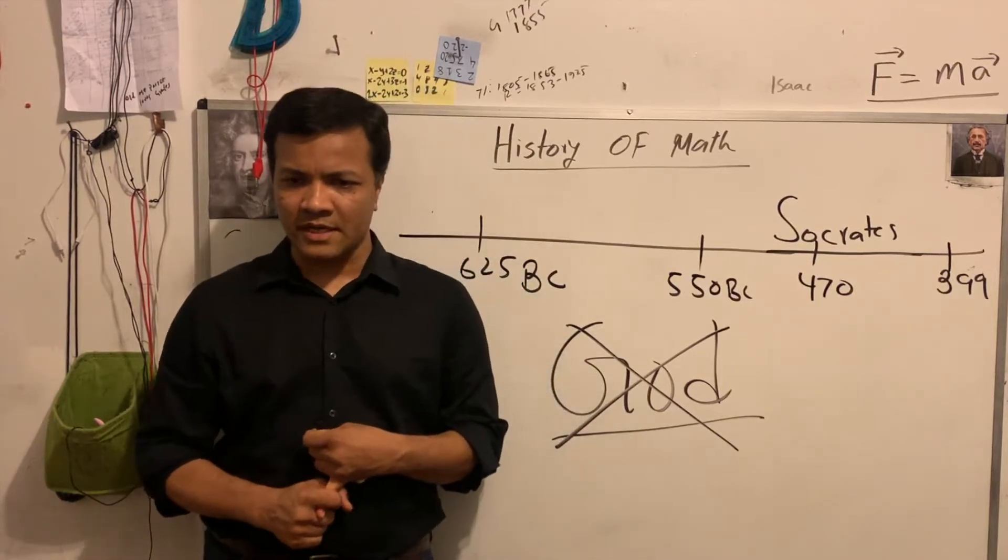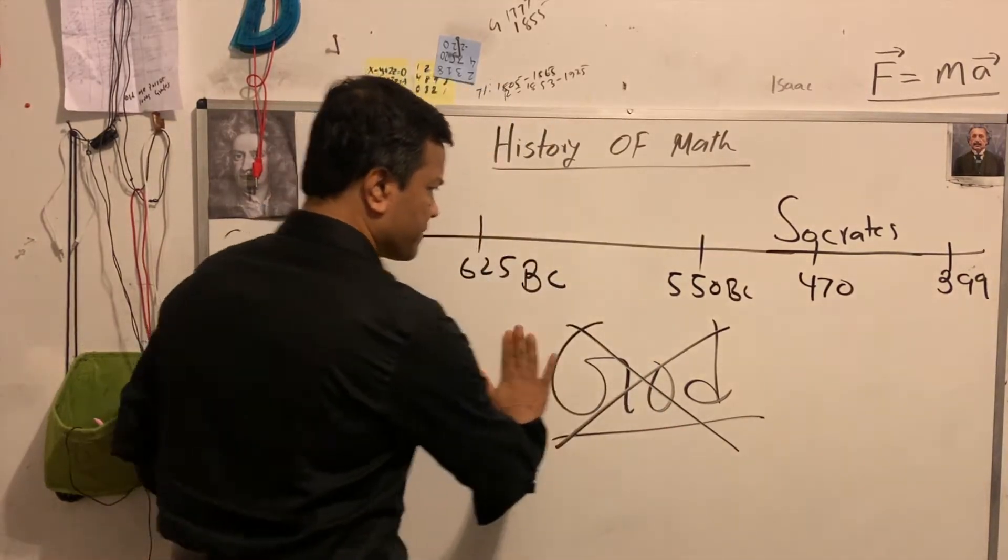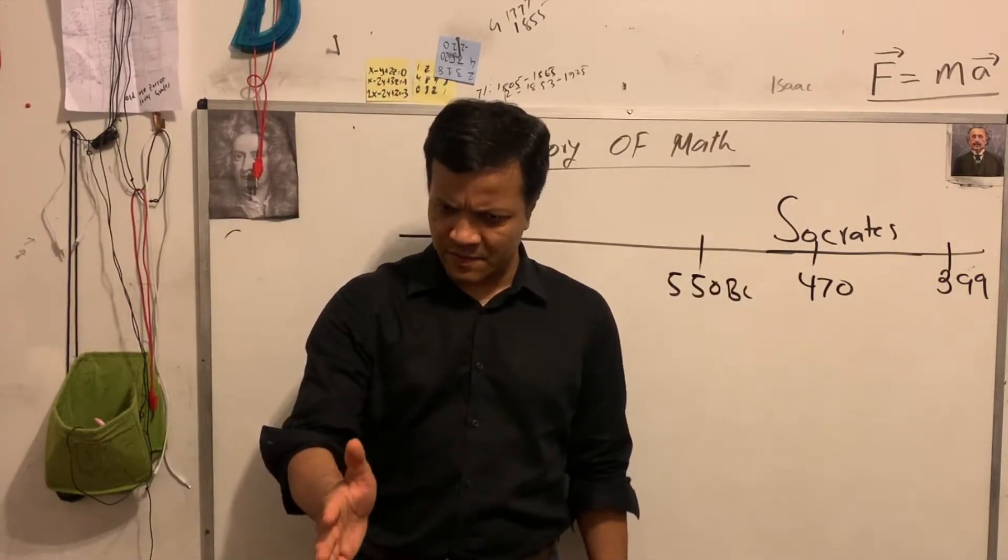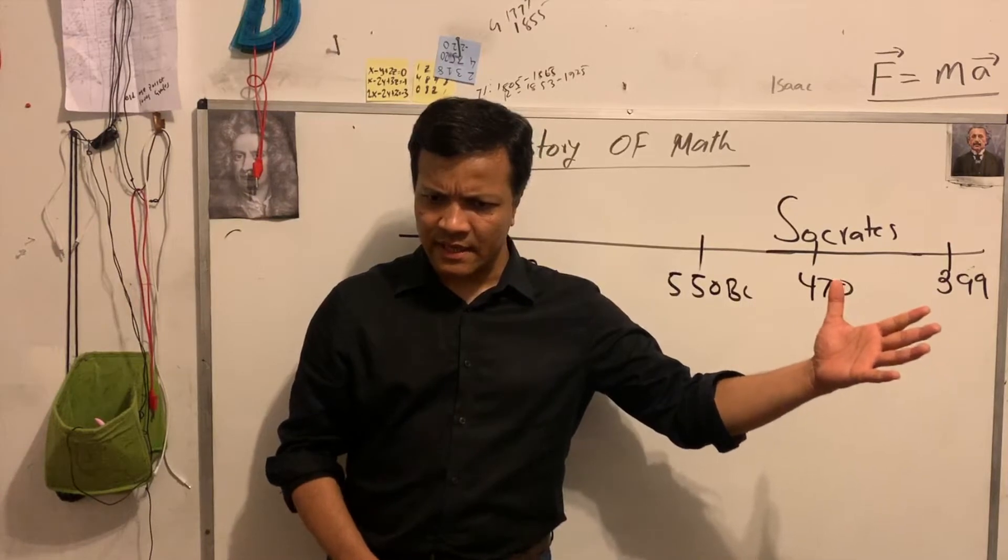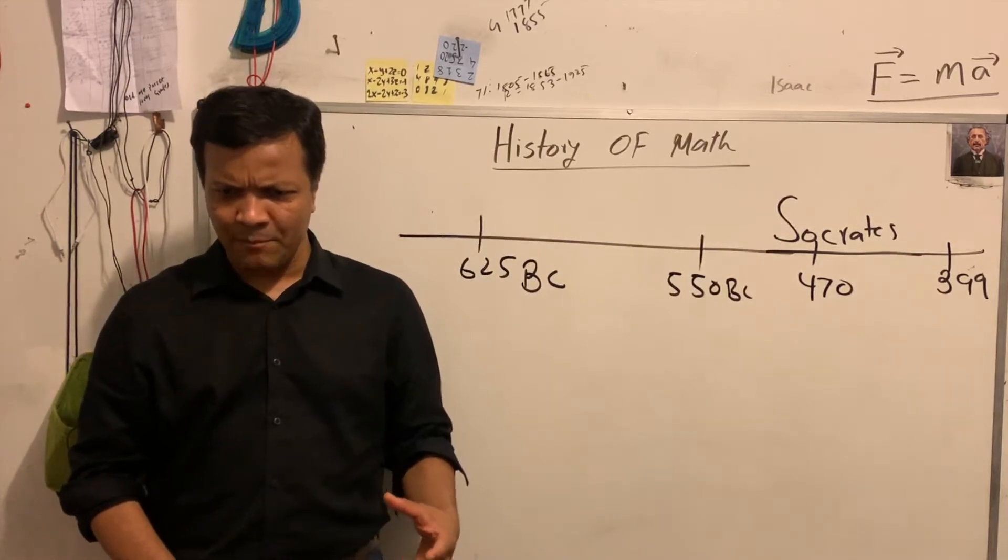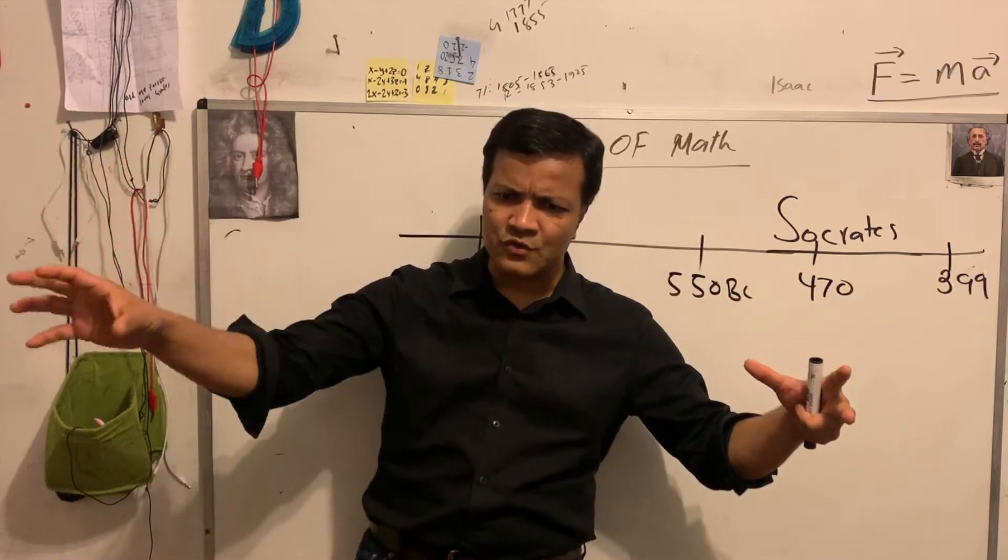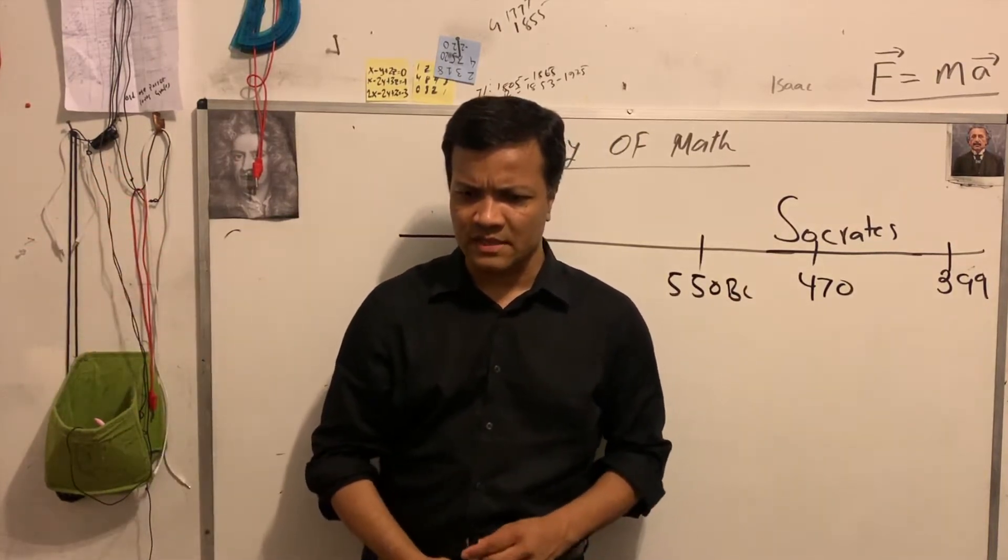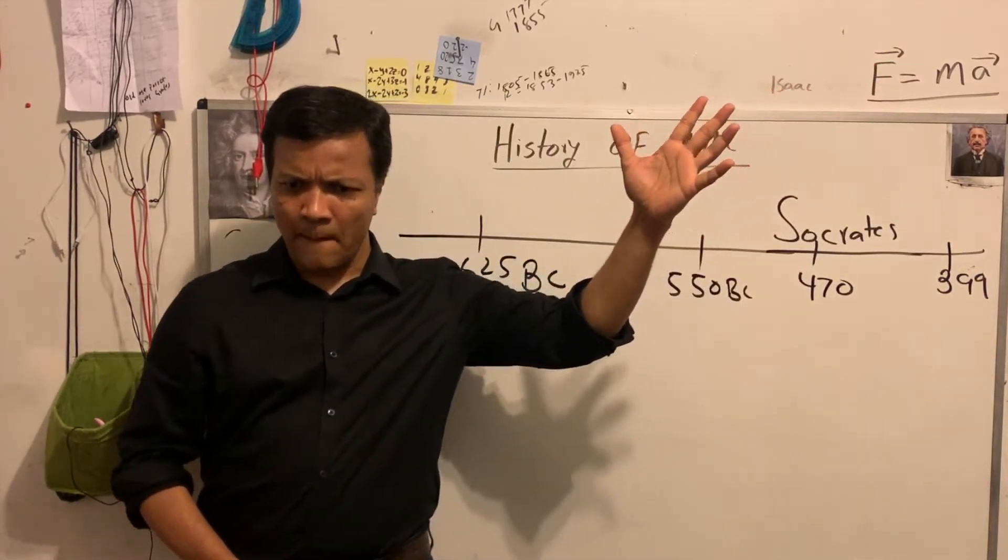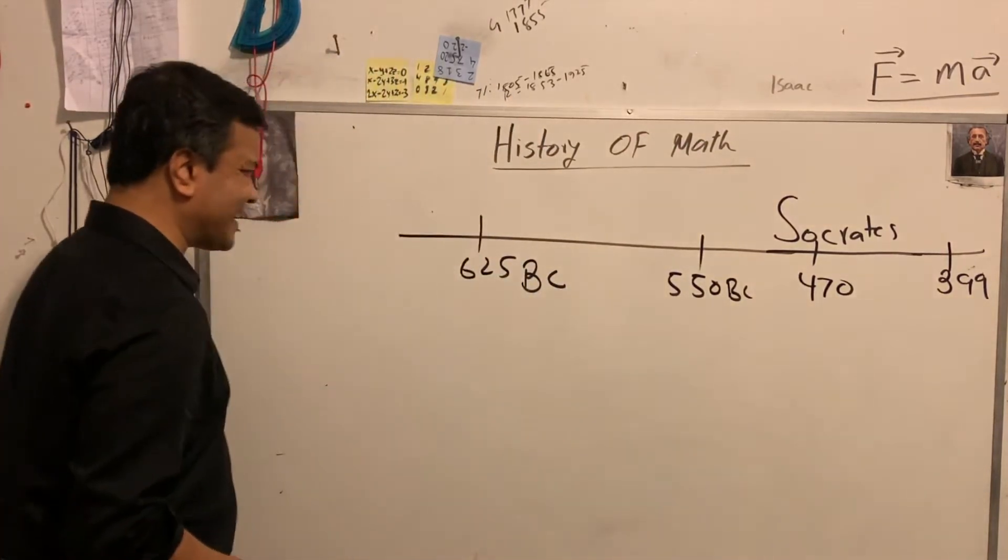He is credited for one of the most famous mathematics theorems. But before we get to that, we also remind you he is also one of the founding fathers of science because he used amber and hypothesized that if you rub the amber, you would be able to create static electricity. For example, rubbing amber will allow electrons to transfer from one object to another object. He hypothesized that. What was his contribution in mathematics? His contribution in mathematics was great.